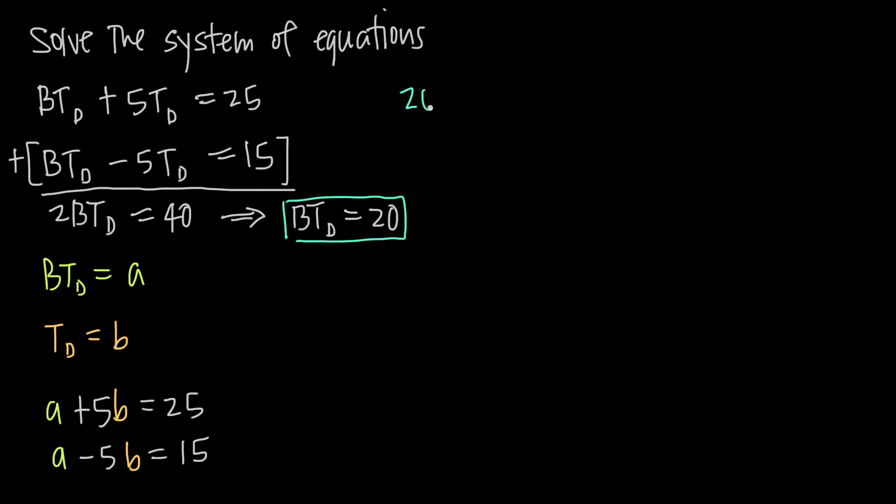So BT sub D equals 20. We'll get 20, and then we have plus 5T sub D equals 25.